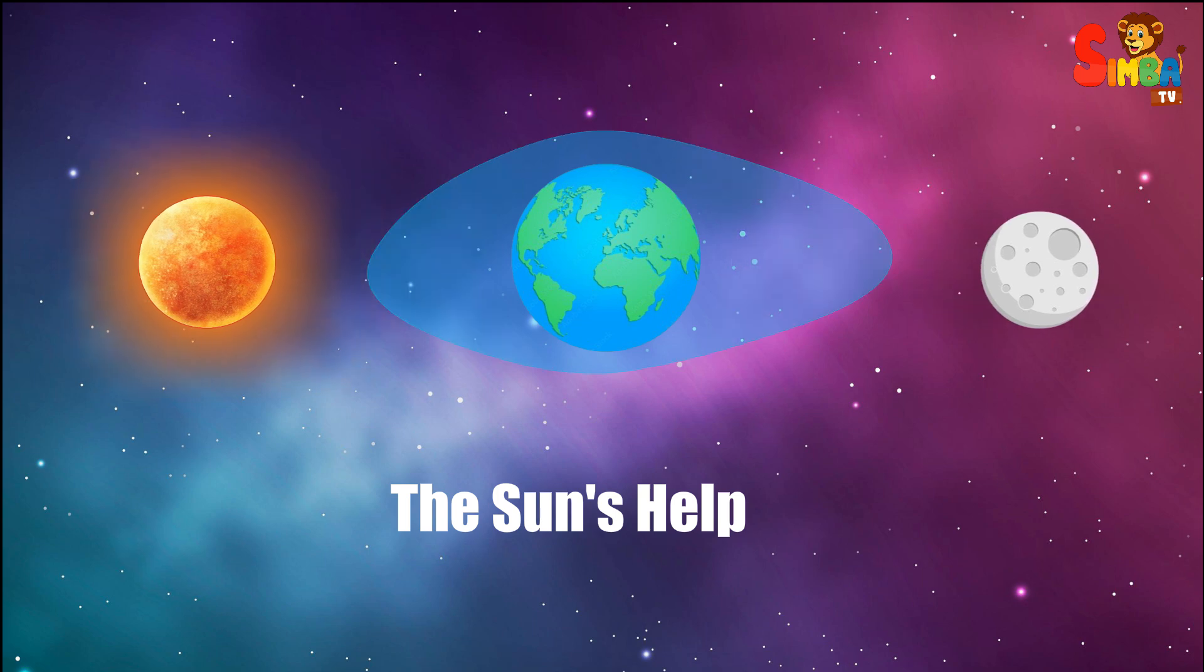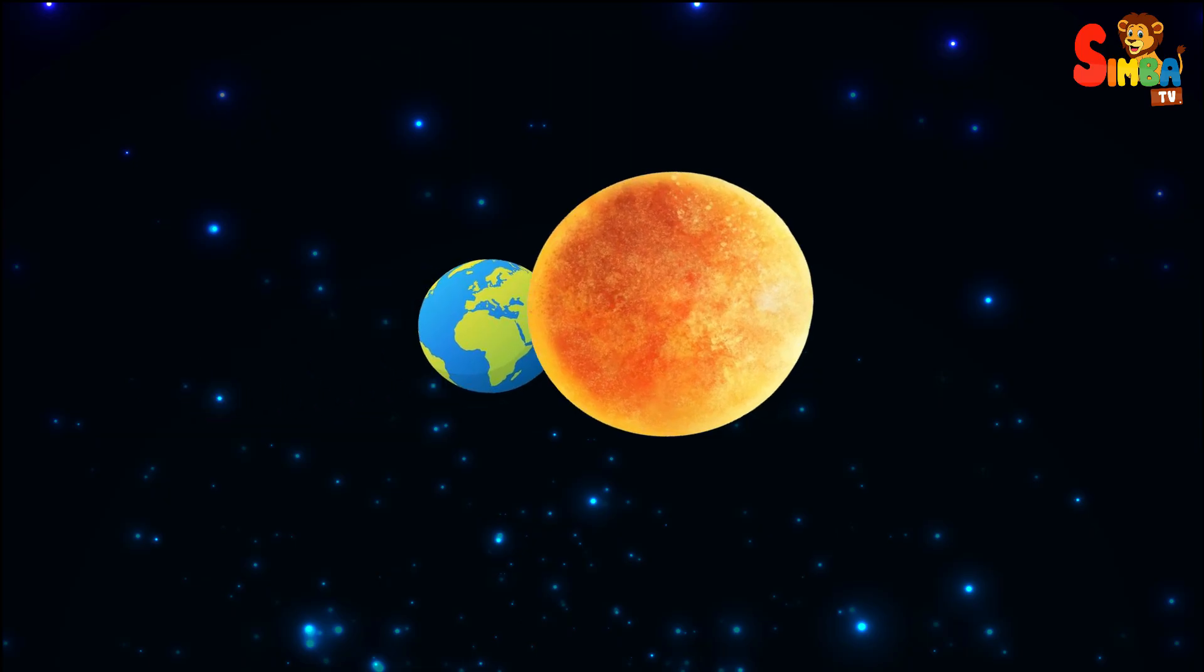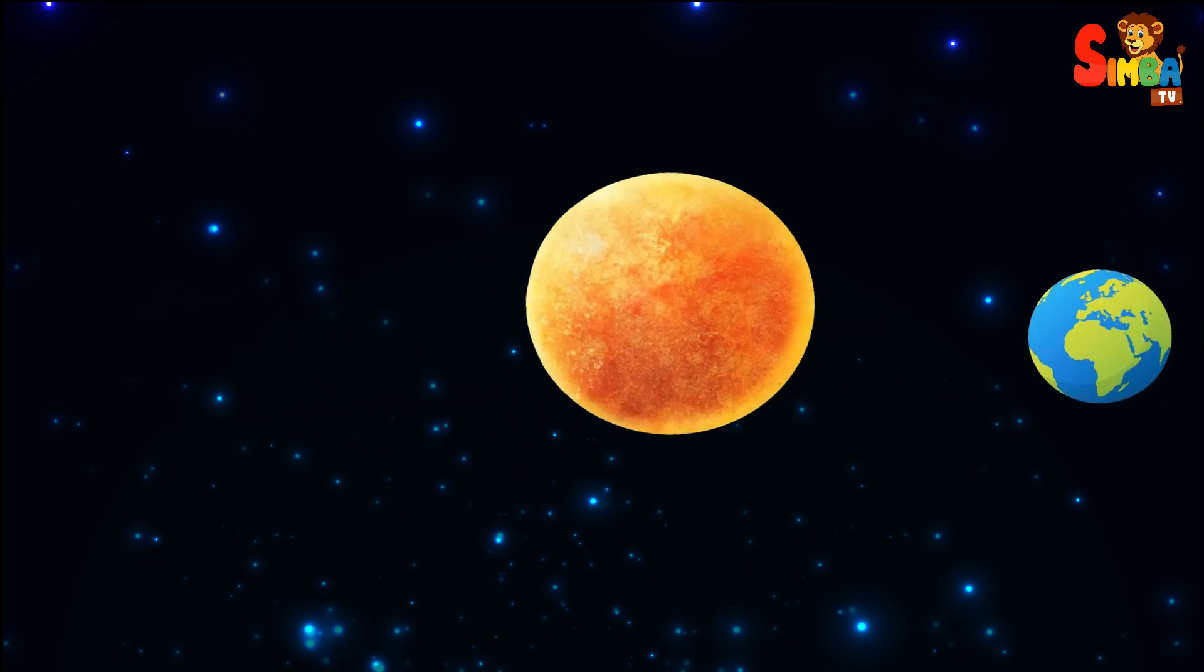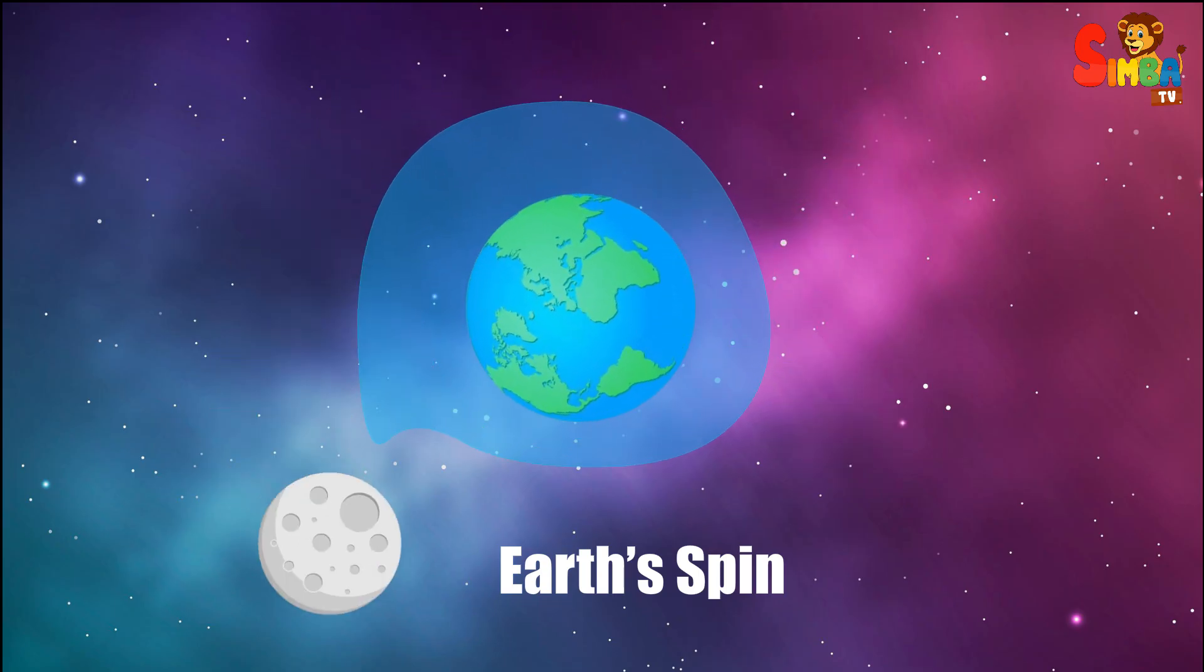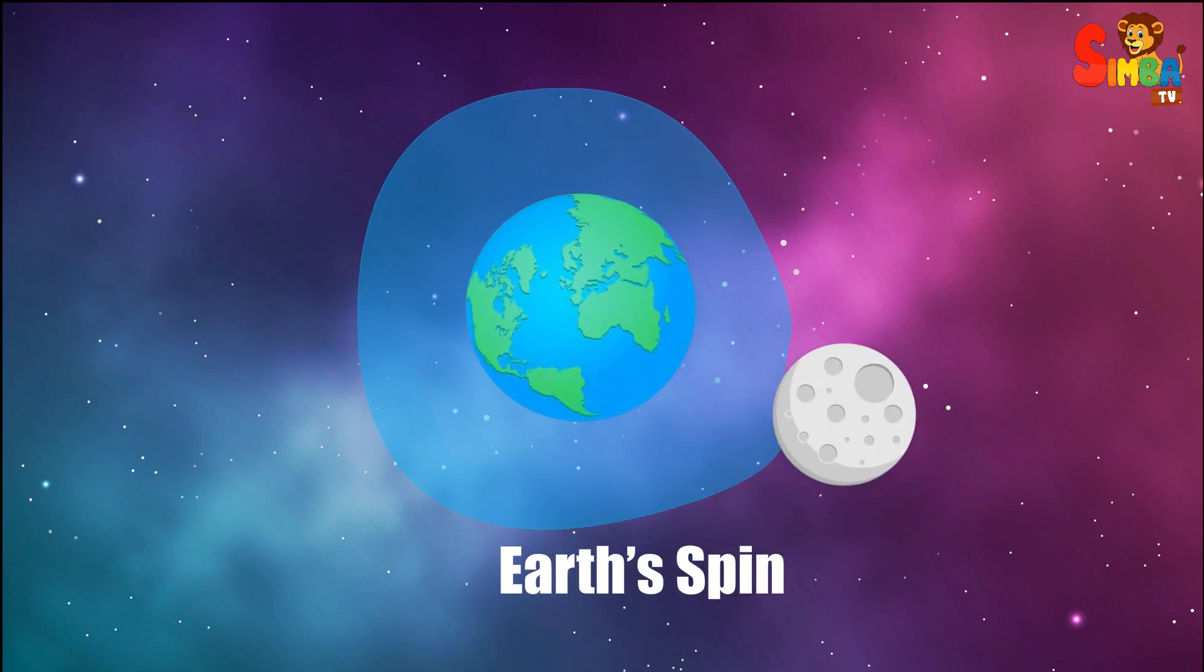Earth's spin. The earth spins around like a top. As it spins, different parts of the ocean get pulled by the moon, making the water go up and down. This is why most places have two high tides and two low tides every day.